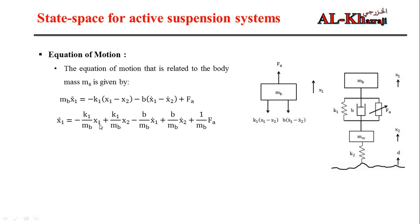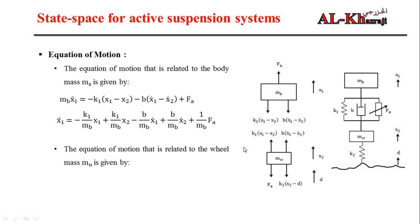We define the states of the system as: x1 (position of the first mass), x2 (position of the second mass), x1-dot (velocity of the first mass), x2-dot (velocity of the second mass), and also the actuator force applied on the first mass. Using the same procedure, we will now build the free body diagram for the second mass.